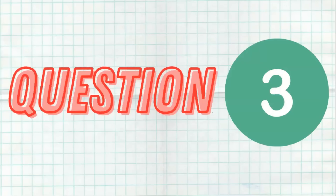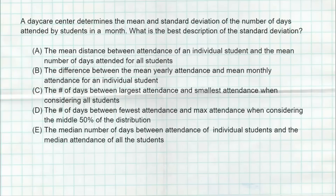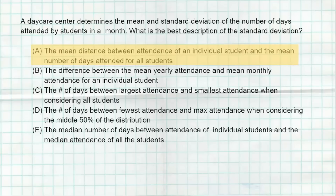Question number three. The correct answer is A. This is a classic question making sure you understand what standard deviation represents. Standard deviation is the approximate distance that the values in your data set are from the mean — think of it as an average distance that individual students are from the mean number of days attended for all students. The other choices don't make sense based on what we've learned about standard deviation.